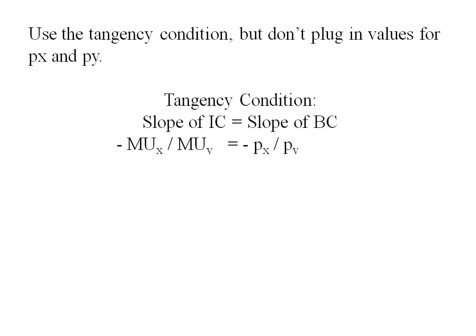The tangency condition says the slope of the indifference curve will be equal to the slope of the budget constraint, or the negative of the marginal utility of x to marginal utility of y equals the negative of px over py. My original utility function is x times y, and taking the partial derivatives give me my marginal utility of x and my marginal utility of y.